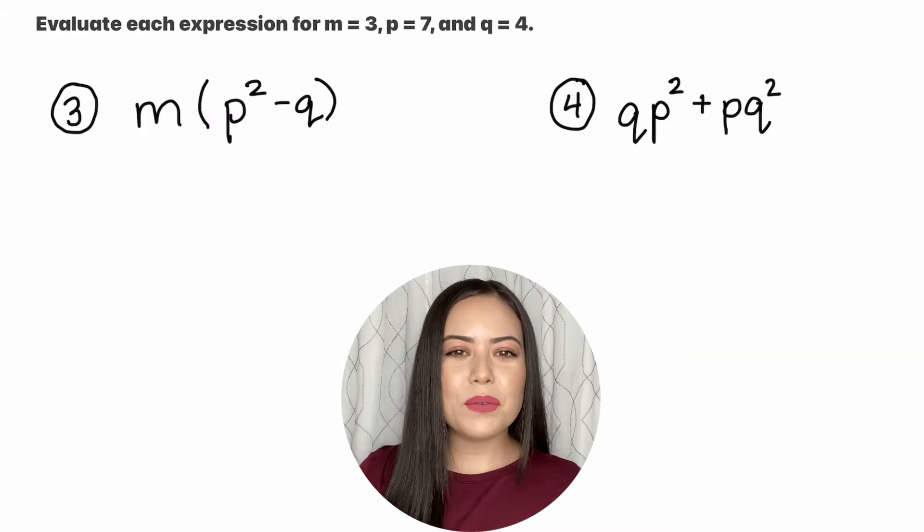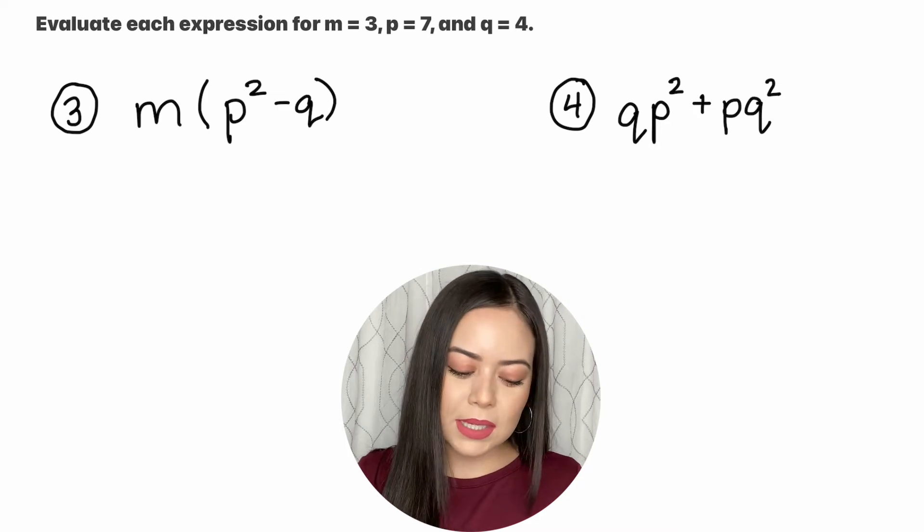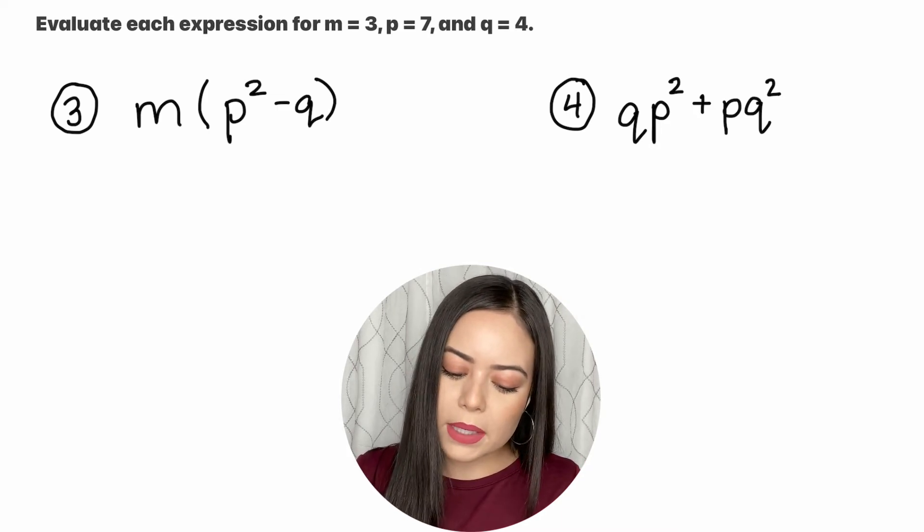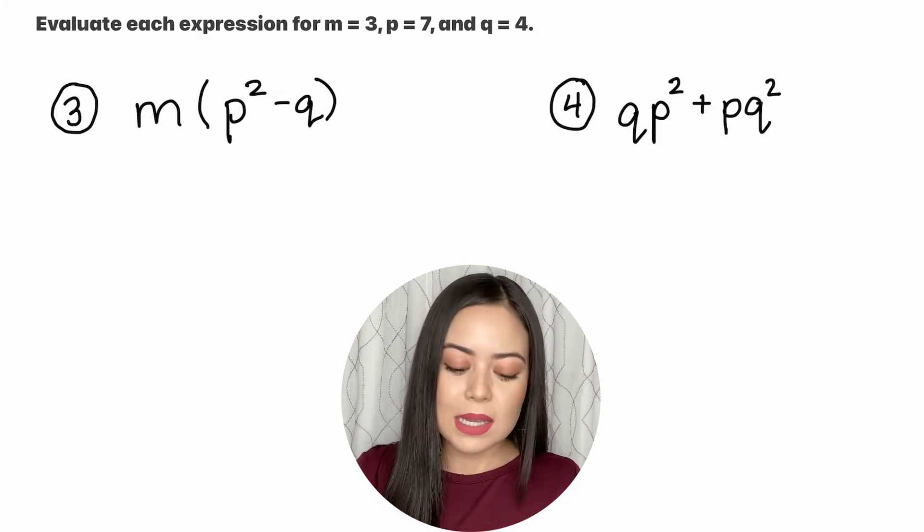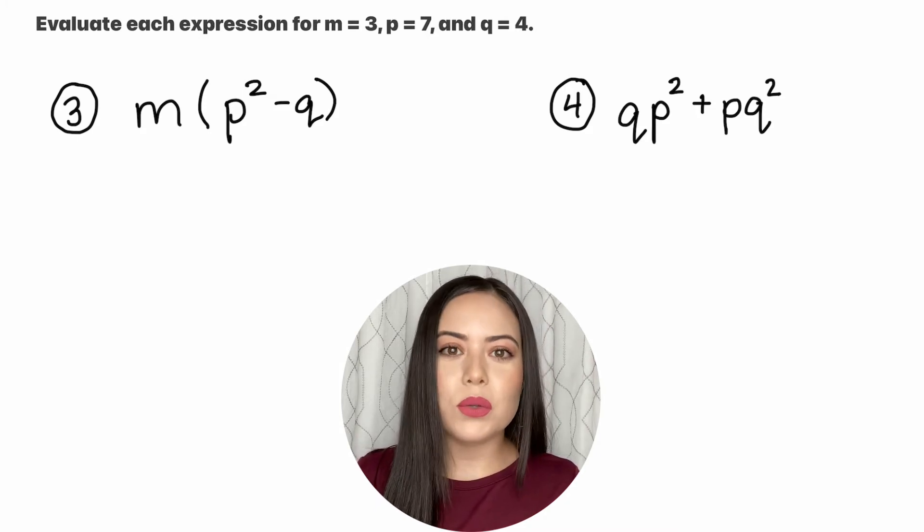For questions 3 and 4 we have a different set of directions. It says evaluate each expression for m equals 3, p equals 7, and q equals 4. So again we're just going to be plugging in those values into each of our terms for questions 3 and 4.